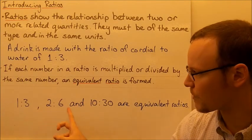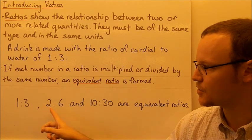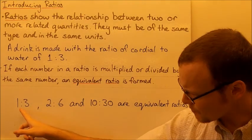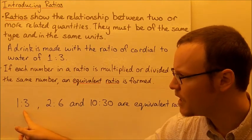So here we've got some equivalent ratios, three equivalent ratios. To get from 1:3 to 2:6, we multiply both of those numbers by two. One times two is two, three times two is six.